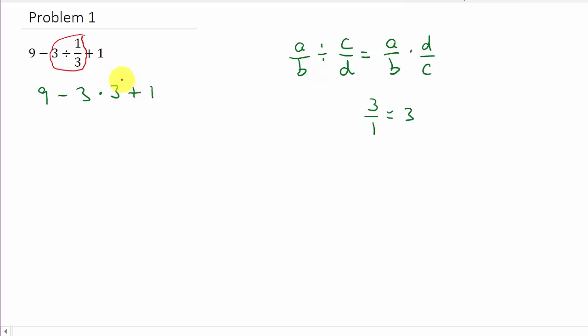So now we're going to do the multiplication. I've got 9 minus, and then 3 times 3 is 9, plus 1. So we have 9 minus 9 is 0 plus 1, and 0 plus 1 is 1.